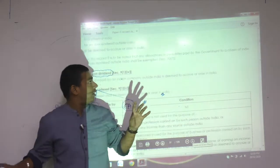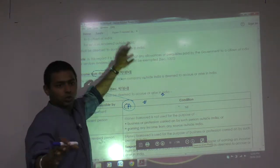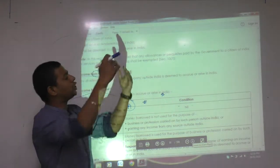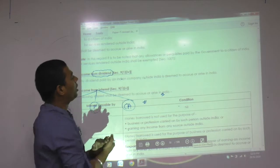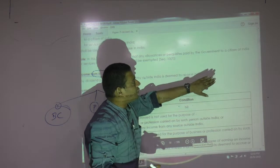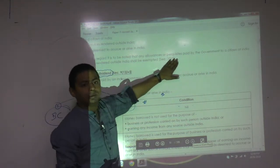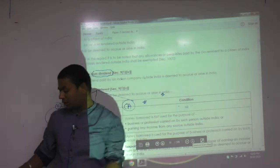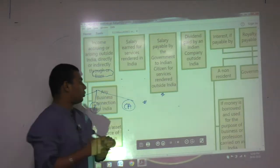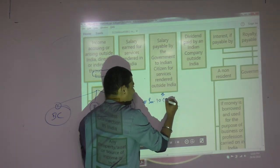So that line is written here. In this regard, it is to be noted that - so they are actually not teaching you this point, but they are teaching you something else. Allowances and perquisites paid by government to citizens of India for service in the outside India shall be exempted under Section 10.7. That language I wanted everyone to write here: Section 10.7.